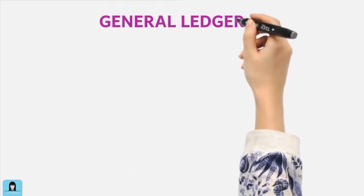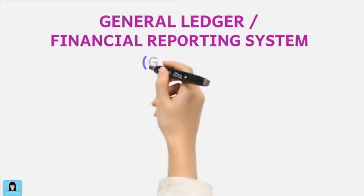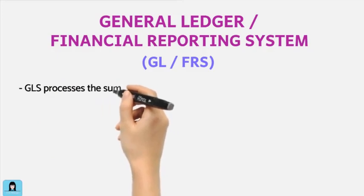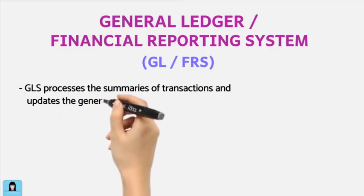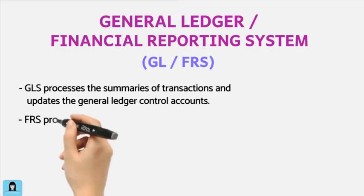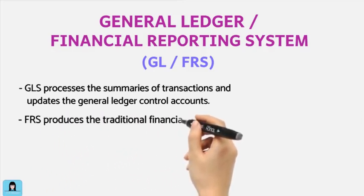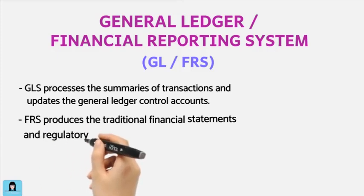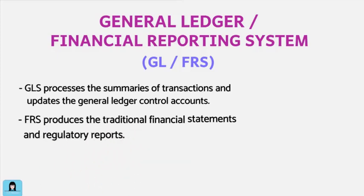The general ledger system and financial reporting system are two closely related subsystems of the AIS. Summaries of transactions such as sales, purchases, payments, and many more are processed in the general ledger system. The financial reporting system produces the financial statements such as the balance sheet and income statement, and also processes regulatory or compliance reports for external users such as income tax returns.